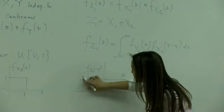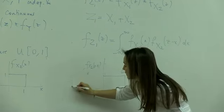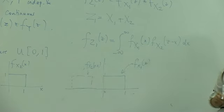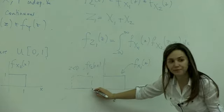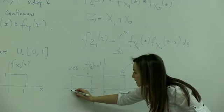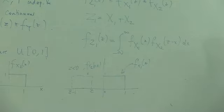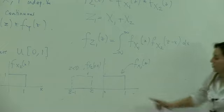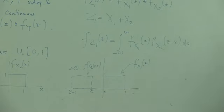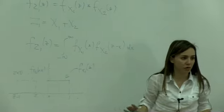For example, consider f of z minus x where z is negative. It's going to look like a flat function where this point is z and this point is z minus 1, because the whole support of the function is 1 — I flipped it and shifted it by z. So when z is negative, the product of these functions is 0 everywhere, meaning the integral equals 0 whenever z is less than 0.